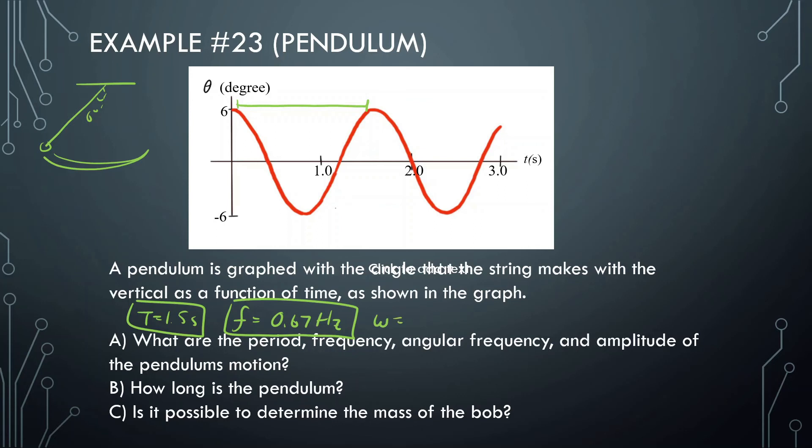Angular frequency, remember, angular frequency is equal to 2π divided by the period, 1.5. So this will be 2π divided by 1.5, and we get 4.19 radians per second.